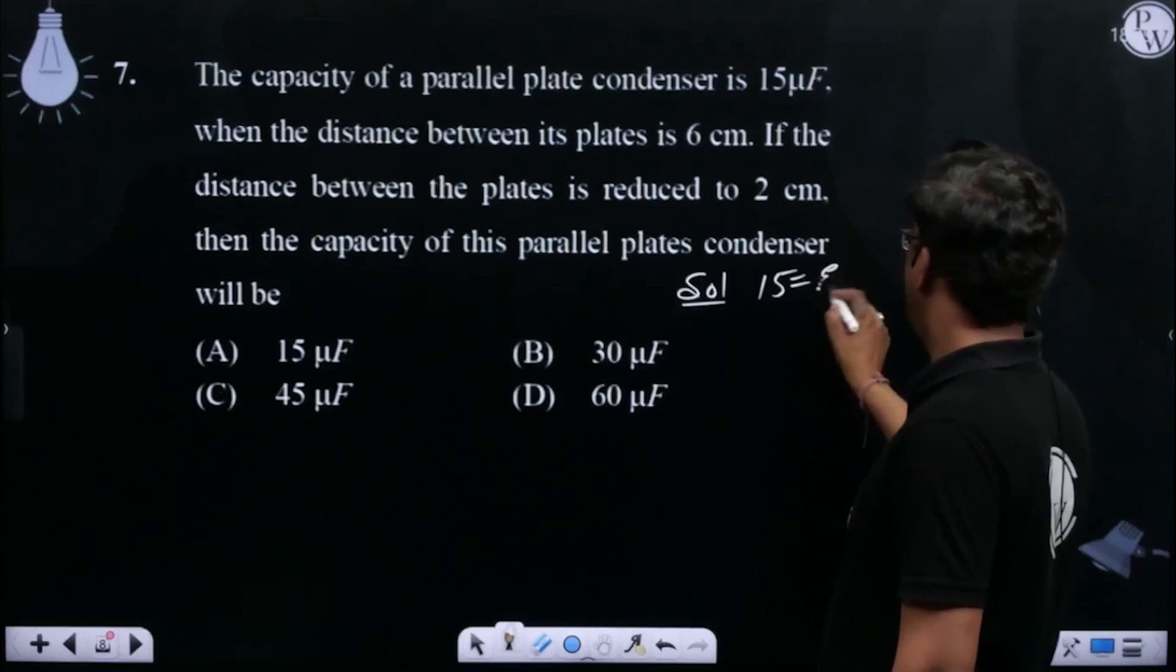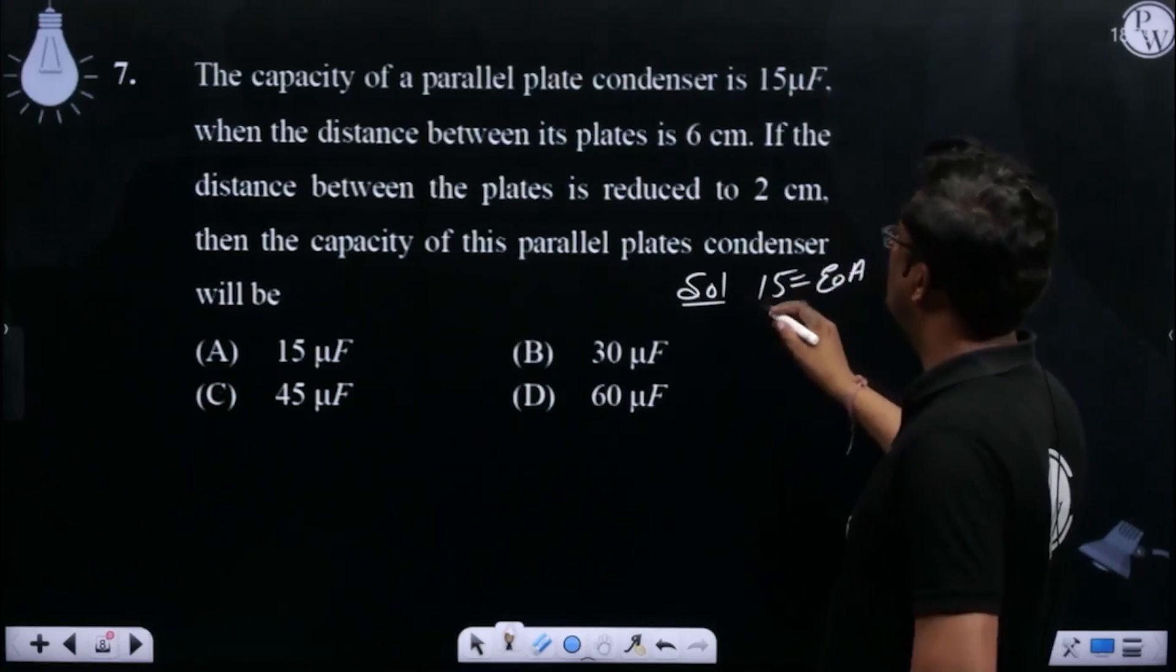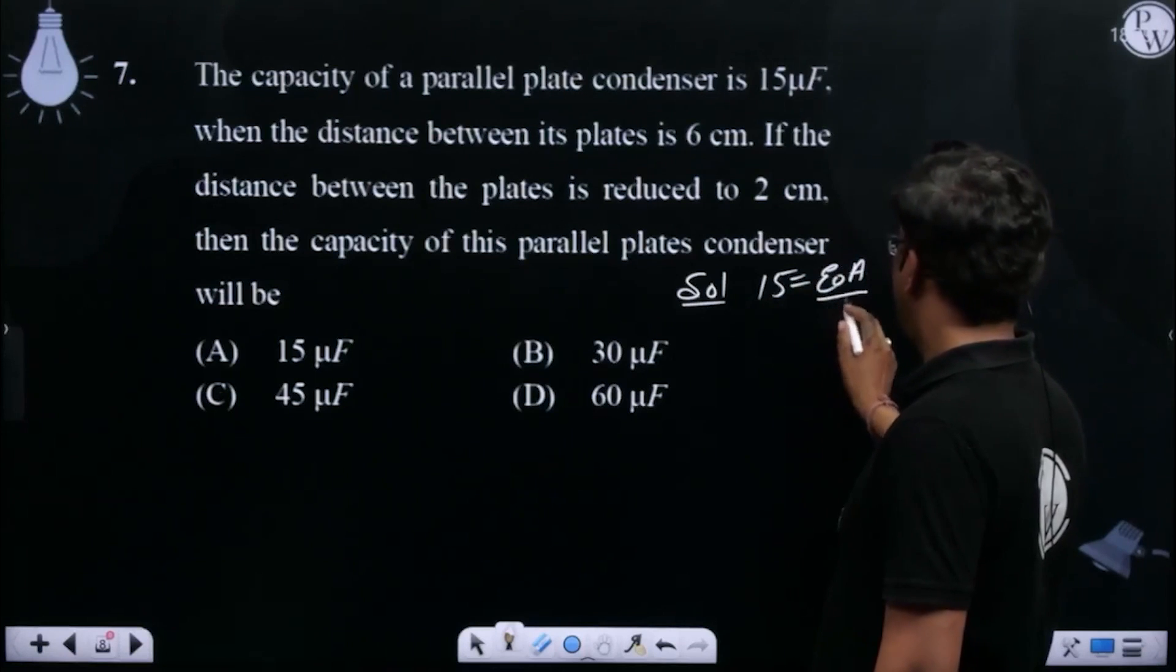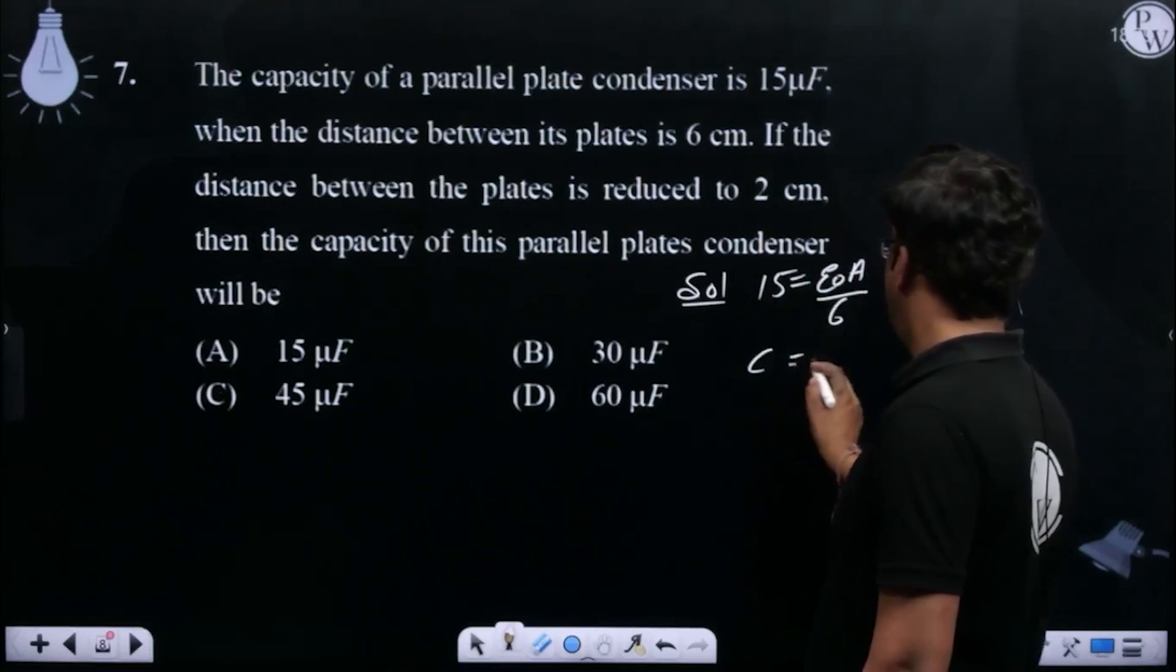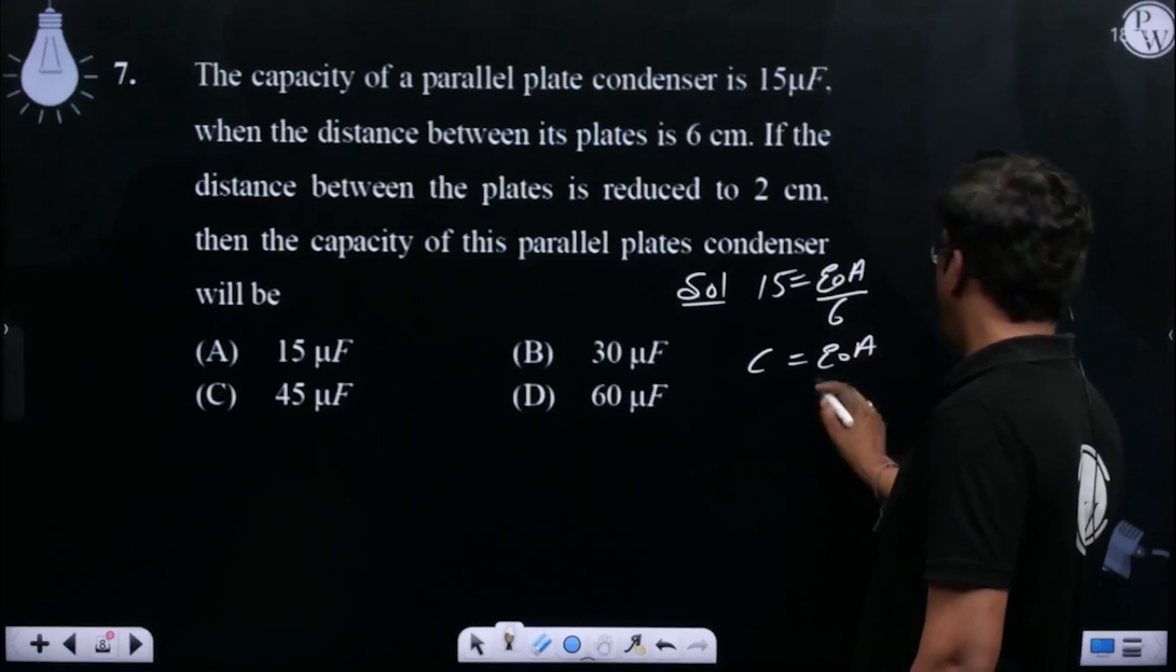So 15 equals ε₀A/D. The capacitance C equals ε₀A/D.